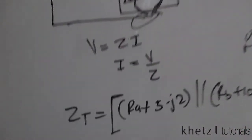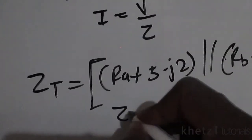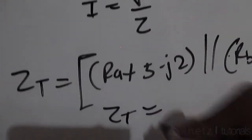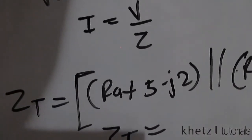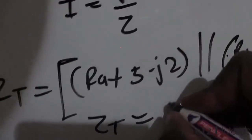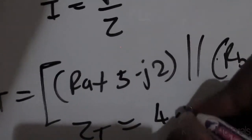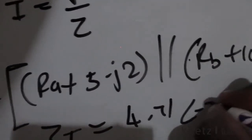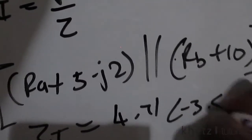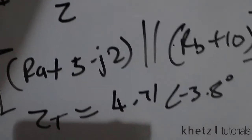Punching in all the values we found, the total impedance is 4.71 at an angle of negative 3.8 degrees.